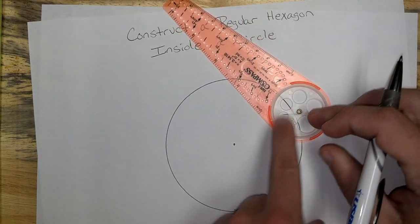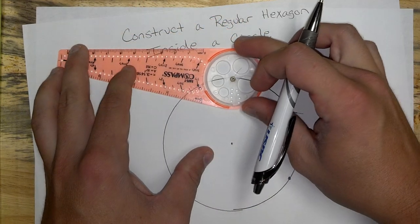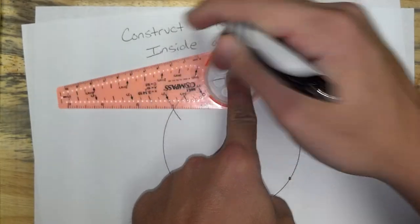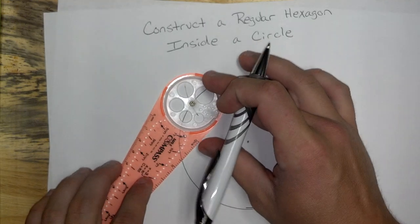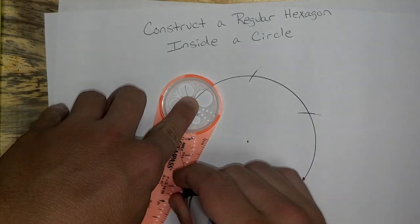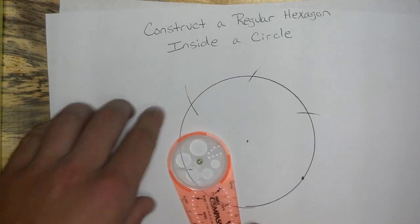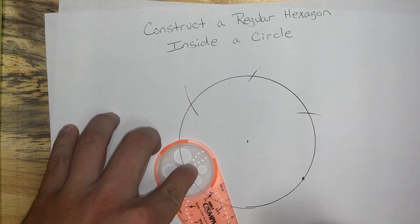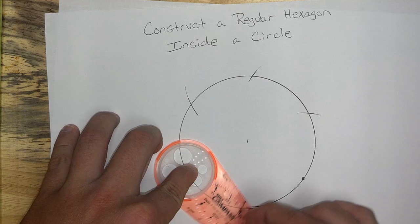So right there, I'm going to keep going. Right here, 2-inch hole again. Over here, 2-inch hole again. 2-inch hole again.